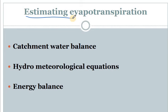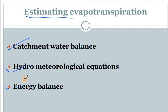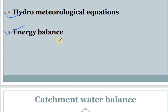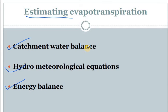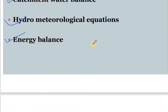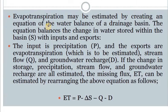There are three methods to estimate evapotranspiration: (1) catchment water balance, (2) hydrometeorological equations, and (3) energy balance. We will see each one by one, starting with the catchment water balance.